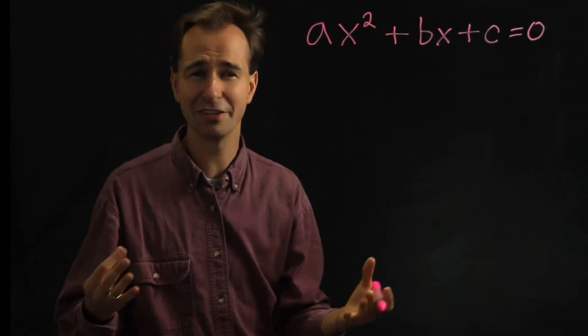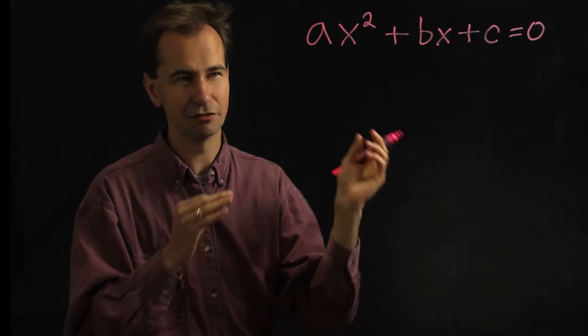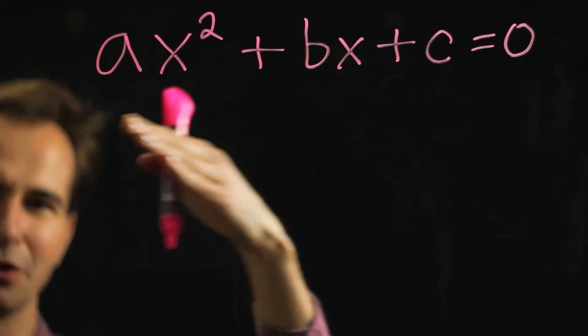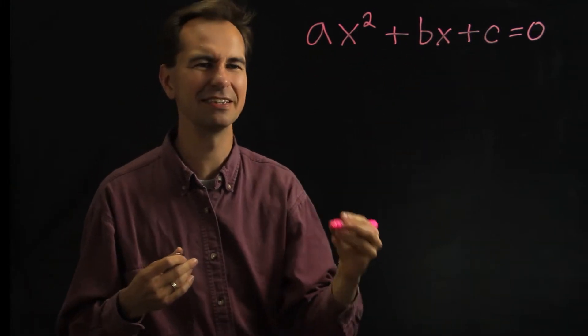And so, sometimes you're given an equation like this and you're told, what can x be? You know, if you plug in x there and there, what does it have to be in order to get this whole thing to equal zero? So, and usually you have actual numbers for a, b, and c.